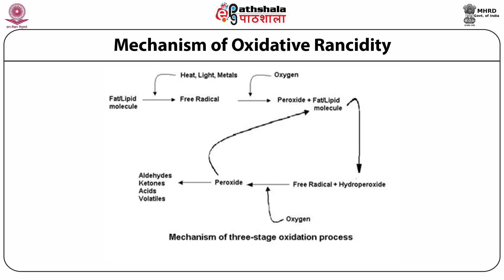This figure depicts the mechanism of the three-stage oxidation process of lipids. Any fat or lipid molecule when it comes in contact with heat, light or metal, gives a free radical. This free radical combines with oxygen to produce a peroxide, and this peroxide again combines with a new fat or lipid molecule to produce a hydroperoxide, and again a free radical is produced. Meanwhile, in the form of secondary products, aldehydes, ketones, acids and volatile compounds are formed, and these compounds provide bad odor and flavor to the fats and oils.